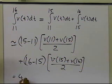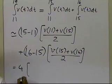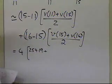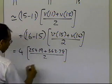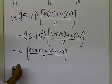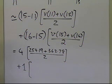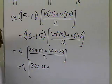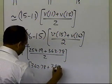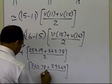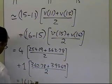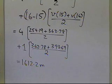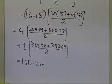Substituting the values: 4 × (254.19 + 362.78) / 2, plus 1 × (362.78 + 393.69) / 2. The velocity at t=11 was approximately 254.19, the velocity at t=15 is the given data point 362.78, and the velocity at t=16 was interpolated as 393.69. Calculating this gives 1612.2 meters as the approximate value of the integral of velocity from 11 to 16.